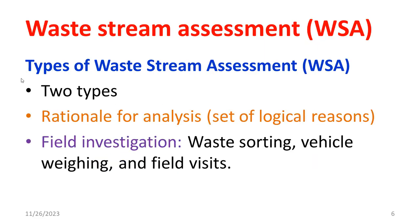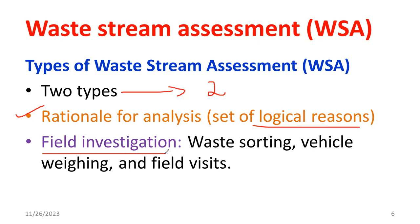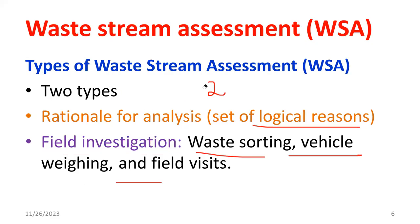Waste stream assessment can be broadly divided into two types. The first is rationale for analysis, also known as a logical approach based on historical information. The second is field investigation. There are sub-methods of field investigation such as waste sorting, vehicle weighing, and field visit. We will discuss both types of waste stream assessment separately.